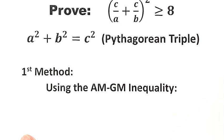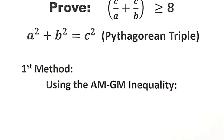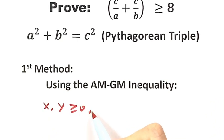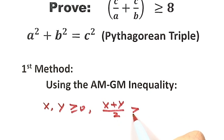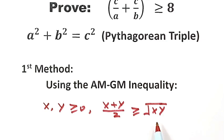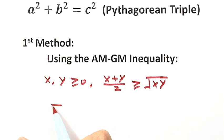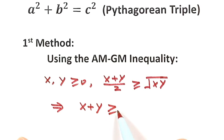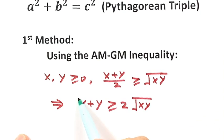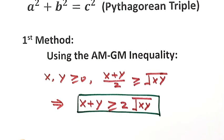First we have to use the AM-GM inequality. That is, if x and y are bigger than or equal to 0, then (x + y)/2 is bigger than or equal to √(xy). We can rewrite this: if both sides are multiplied by 2, then x + y ≥ 2√(xy). We're going to use this form to prove our inequality.